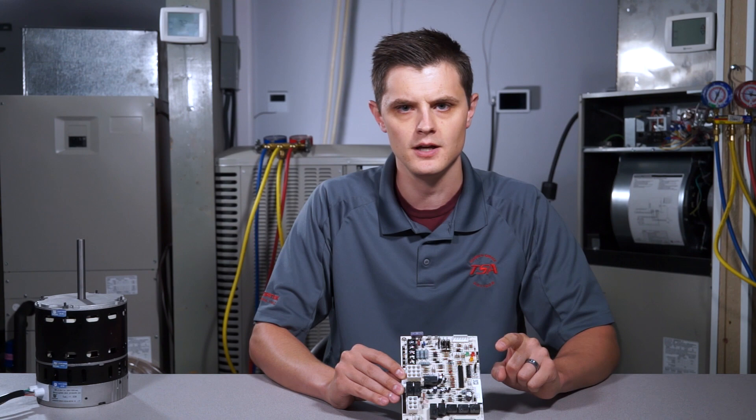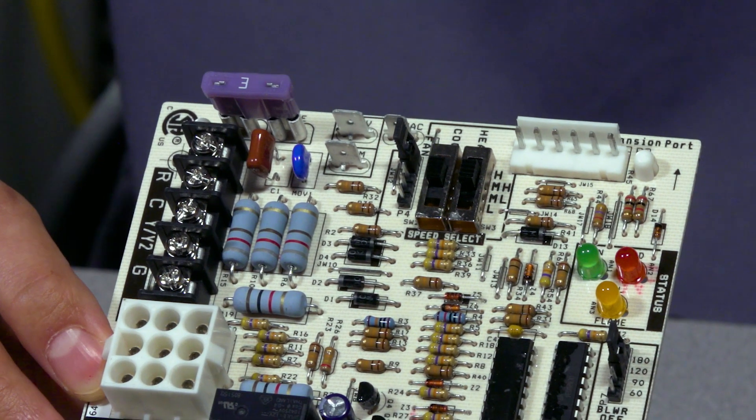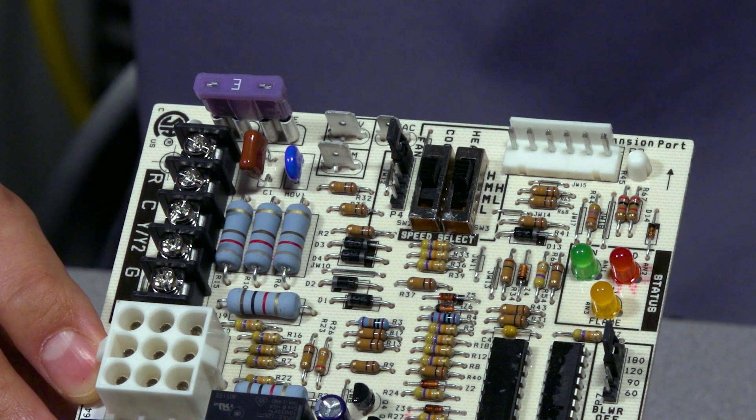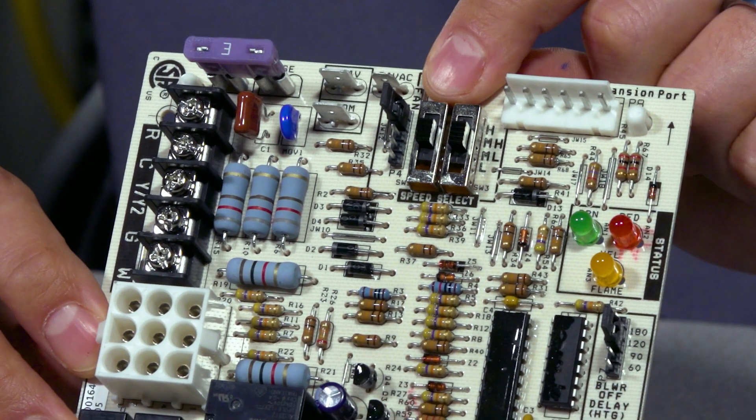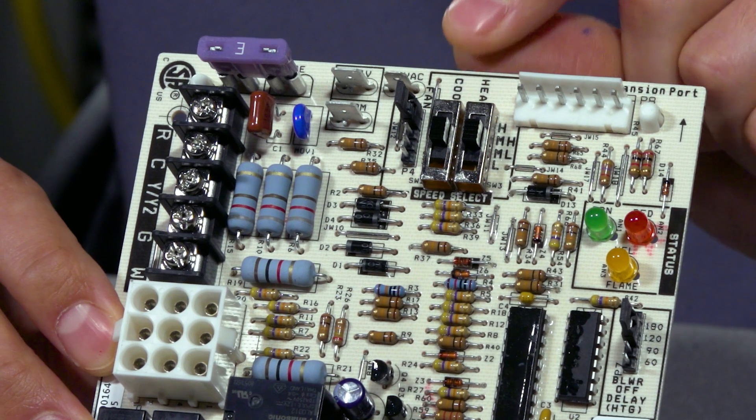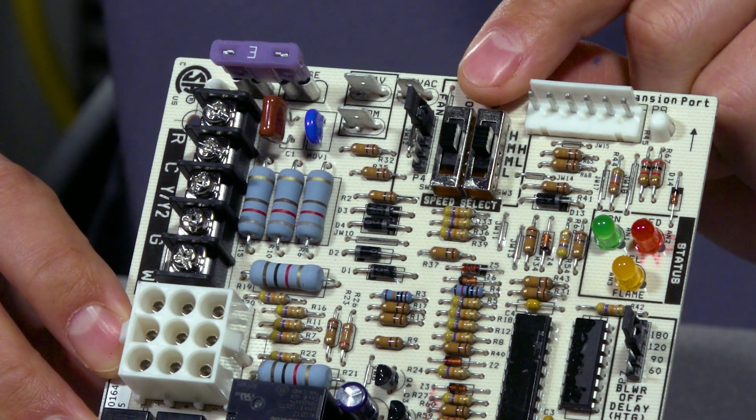Now another thing too with the new blower motor, you will have up to five speeds on that motor. With these dip switches you only have the selection of four for blower speeds, but you do have a fifth on the motor.